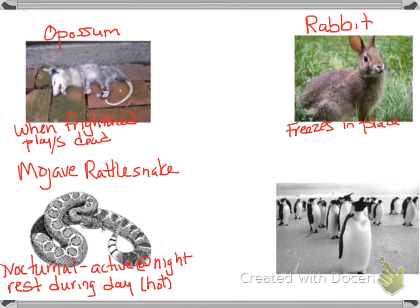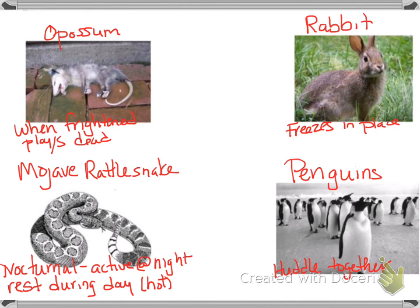And then we have penguins — they huddle close together for warmth and safety. Those are just some different examples of behavioral adaptations that these animals use.